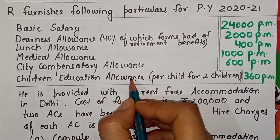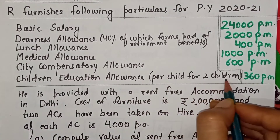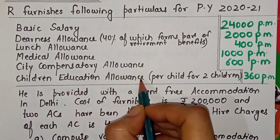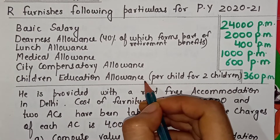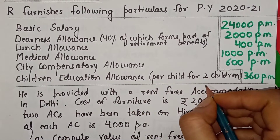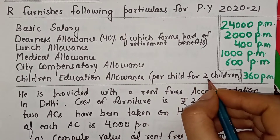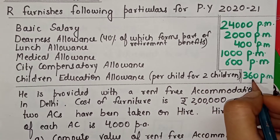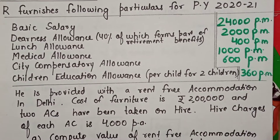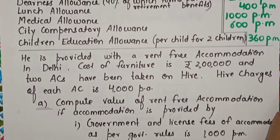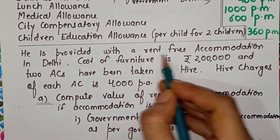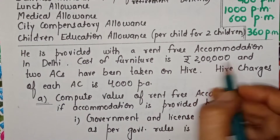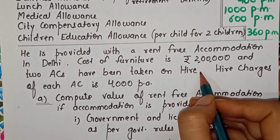Children's education allowance for two children per month — this is partially exempted. He is provided with a rent-free accommodation in Delhi.